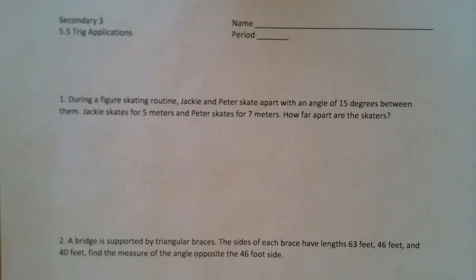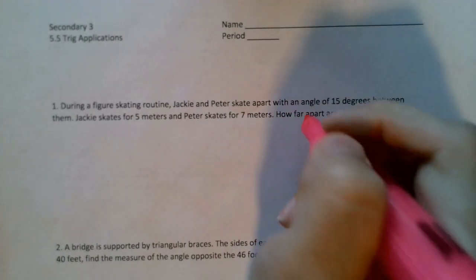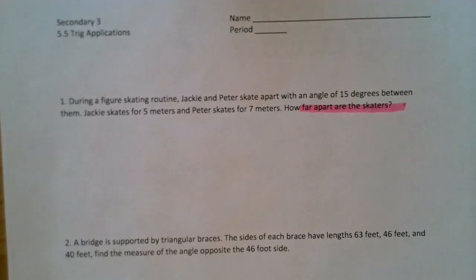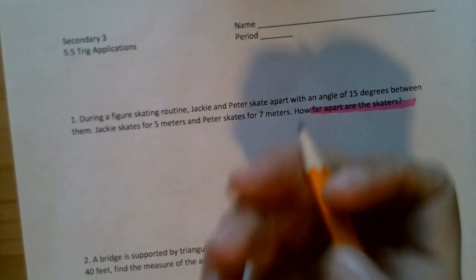Number one: During a figure skating routine, Jackie and Peter skate apart with an angle of 15 degrees between them. Jackie skates for 5 meters and Peter skates for 7 meters. How far apart are the skaters? So let's remember our ultimate goal is to figure out how far they are apart. Now what I'm going to do is actually draw this out.